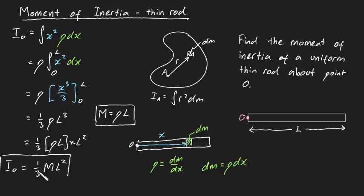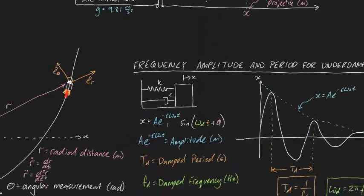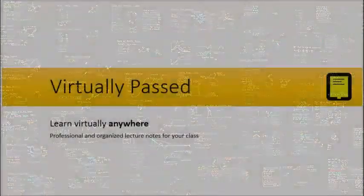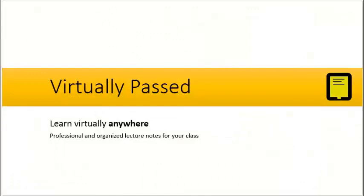This is the moment of inertia of our thin rod, so thin it can be approximated as just a line, about its end point O. I hope that made sense, guys. Thank you.